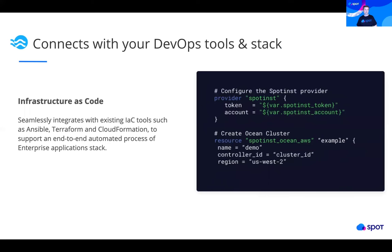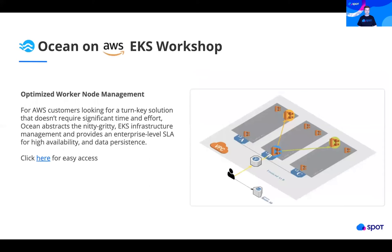With infrastructure as code, you can deploy everything Kubernetes with the DevOps stacks you're using today — whether that's Terraform, KOPS, EKS CTL. Ocean integrates very seamlessly with the tools at your fingertips today. Furthermore, we're officially part of the EKS workshop from AWS. If you use AWS today and use EKS, Ocean is an official section of this workshop for a turnkey solution that will run your EKS cluster as efficiently as possible. This workshop comes directly from AWS, and Ocean is a part of it.